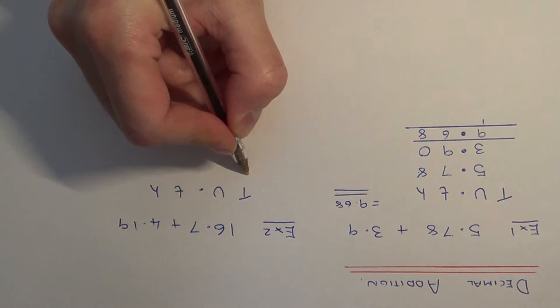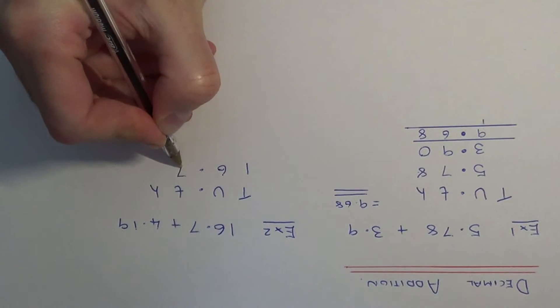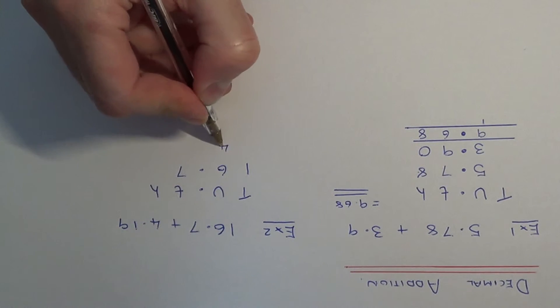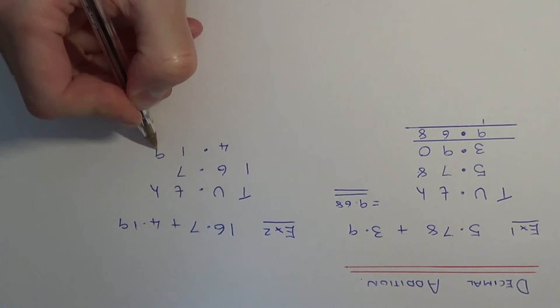This time we have 1 ten, 6 units, and 7 tenths. Our second number has 4 units, 1 tenth, and 9 hundredths.